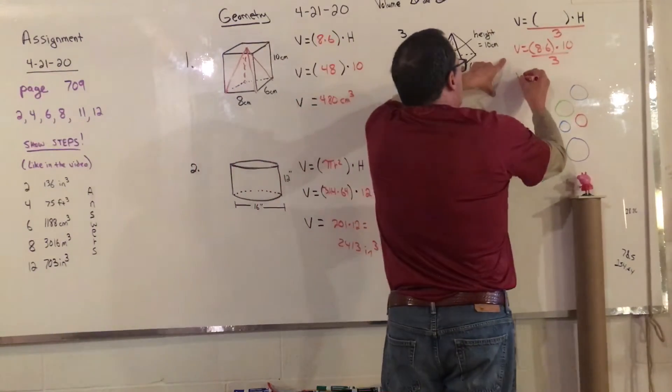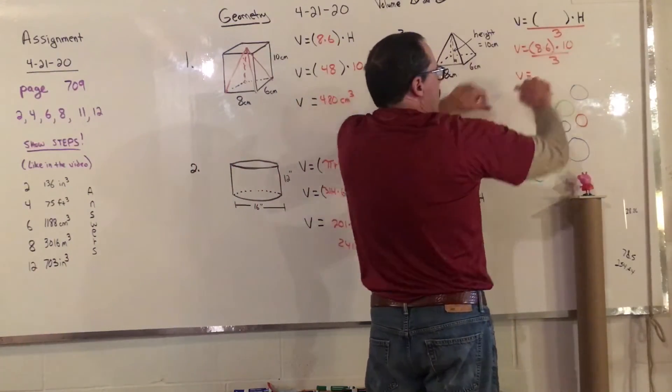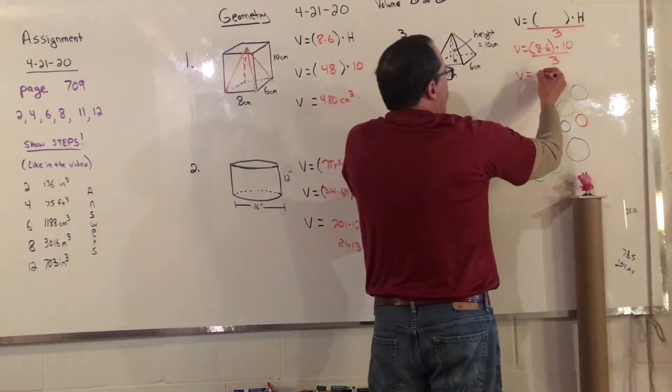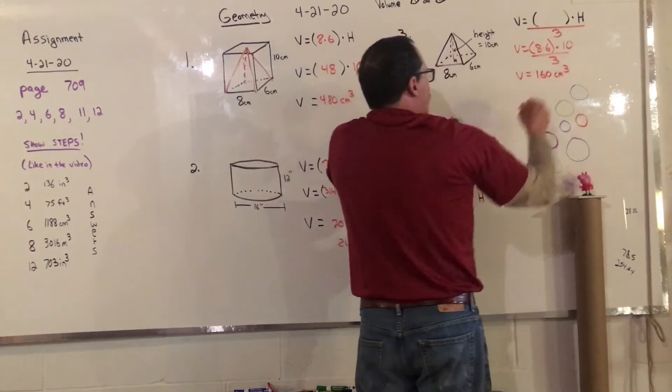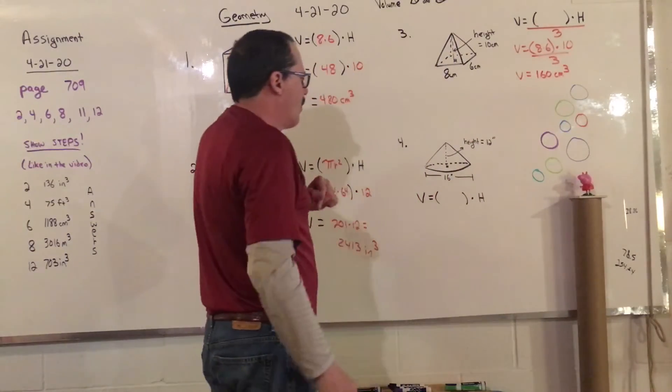So when we do this, we get V equals 48 times 10 is 480, and 480 divided by 3 is 160, and it would be centimeters cubed. Remember that we're counting cubes.